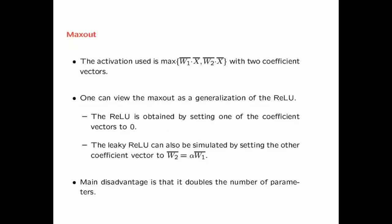Another solution is called maxout. In maxout, it is like using two neurons with weight vectors w1 and w2, and then taking the maximum of their outputs — max(w1·x, w2·x). Maxout is actually a generalization of the ReLU: if you set w2 to zero, you get max(w1·x, 0), which is exactly the ReLU. Even the leaky ReLU can be simulated by setting w2 equal to alpha·w1. The main disadvantage of maxout is that it doubles the number of parameters.